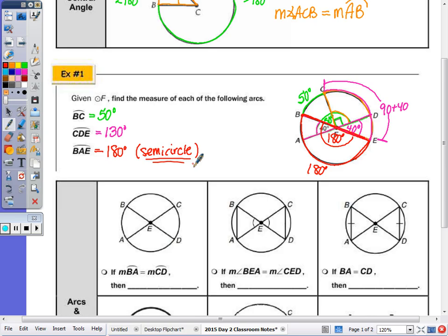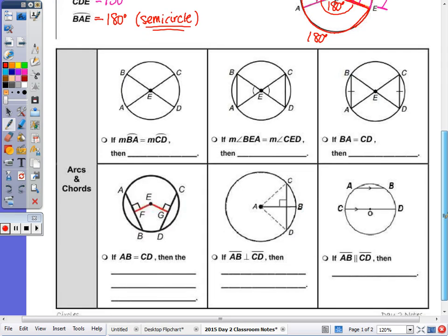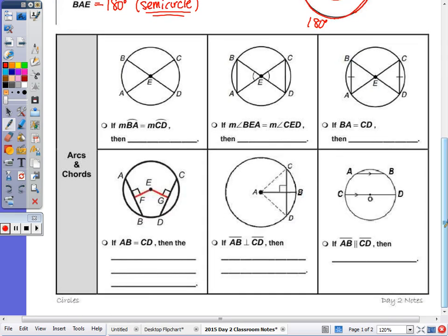Okay, so let's fill in this table here. We have a variety of theorems with arcs and chords of a circle. So starting in the top left-hand corner, it says that the measure of arc BA, so if arc BA is equal to the measure of arc CD, then I know - I'm going to put a 1 and a 2 here - that these two central angles are going to be equal or congruent. So the measure of angle 1 is equal to the measure of angle 2.